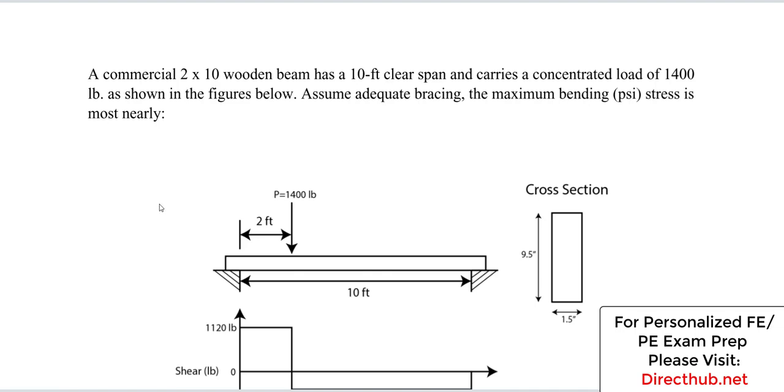Let's do this example where we solve for the maximum bending stress in a beam. What we have here is a commercial 2x10 wooden beam with a 10 foot clear span and carries a concentrated load of 1400 pounds as shown in the figures below. So this is our beam.